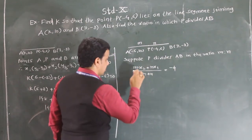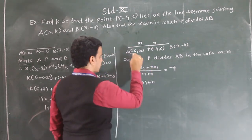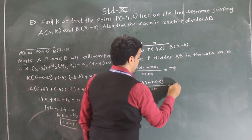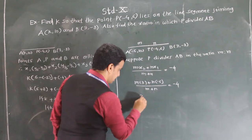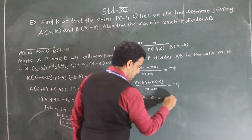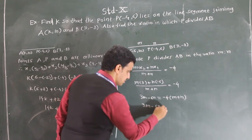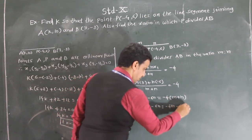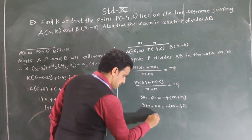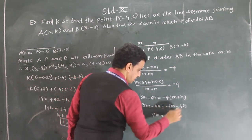We put in values: M times x2 (which is 3) plus N times x1 (which is -6), divided by M + N, equals -4. So 3M - 6N = -4(M + N), giving 3M - 6N = -4M - 4N. Rearranging: 3M + 4M = 7M and -6N + 4N = -2N, so 7M = 2N.